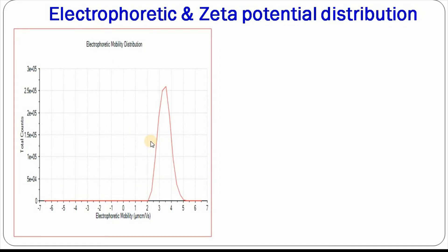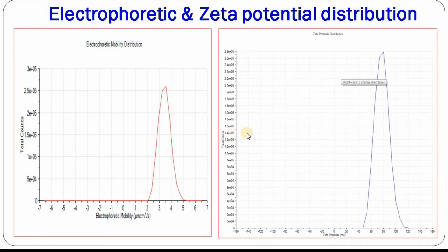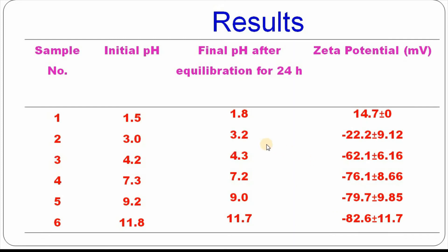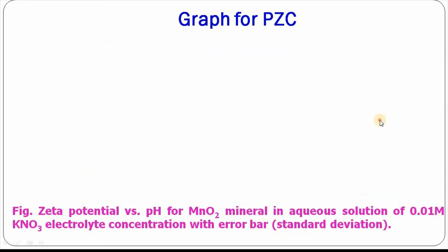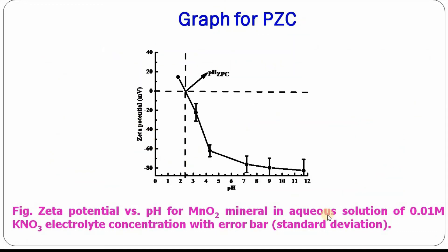Here is the electrophoretic mobility distribution for manganese dioxide. Here is the zeta potential distribution. Results: the table shows the sample number, initial pH, final pH after equilibration for 24 hours, and zeta potential in millivolts. This data was plotted, and here is the zeta potential versus pH curve. From this curve, it is seen that the zeta potential was zero at pH 2.5.